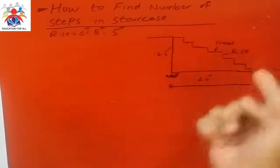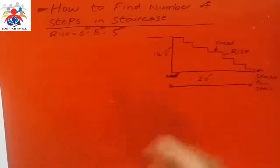In stairs we have two things: first is rise, and the second is tread. Tread is an area where we normally place our feet, and the rise is normally when we take our feet from one point to another point while climbing the stairs.